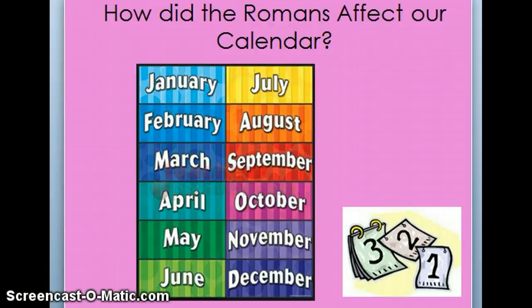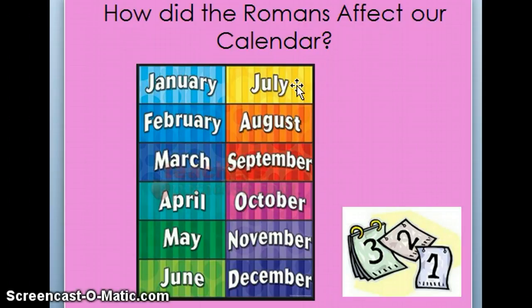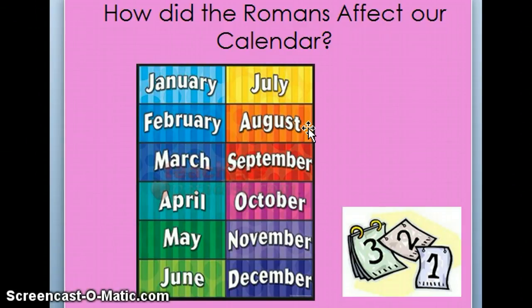Here's a hint: July. Can you think of a Roman leader whose name sounds like July? Julius Caesar! And right below July is August. Do you remember someone whose name sounds like August? Augustus Caesar!